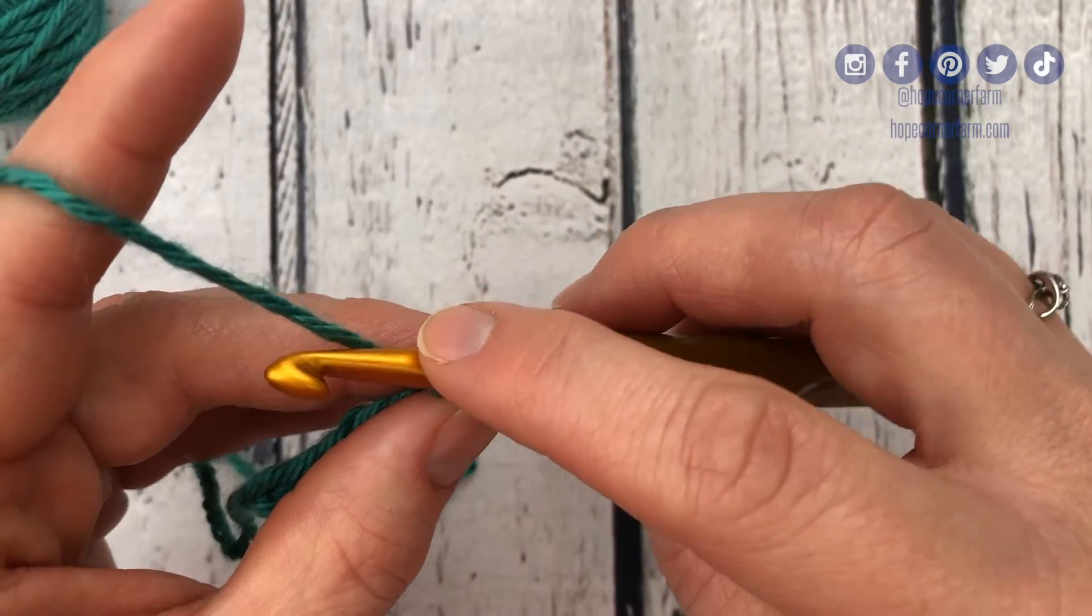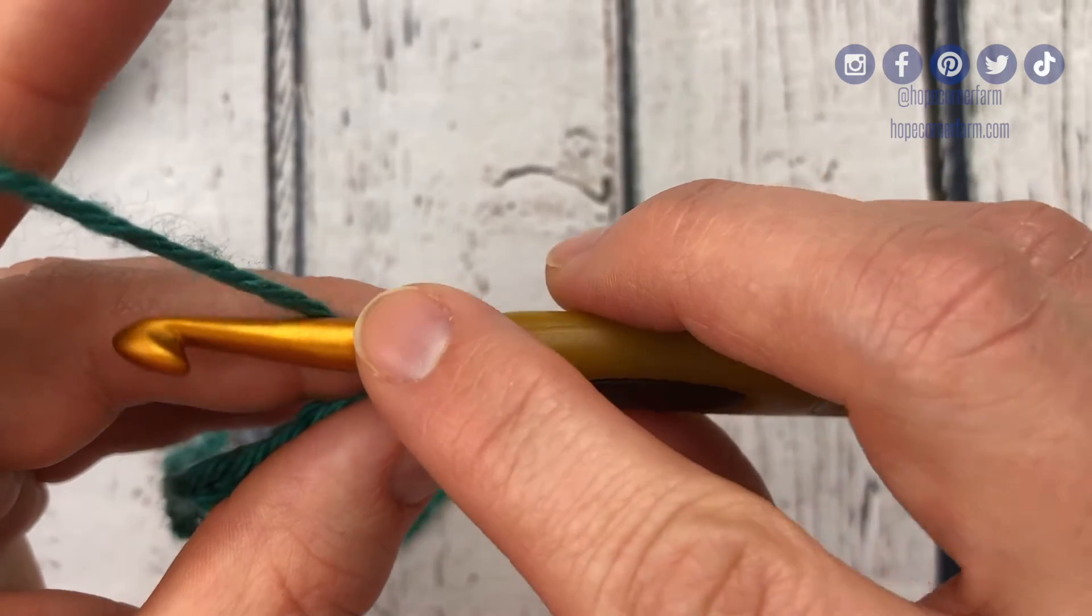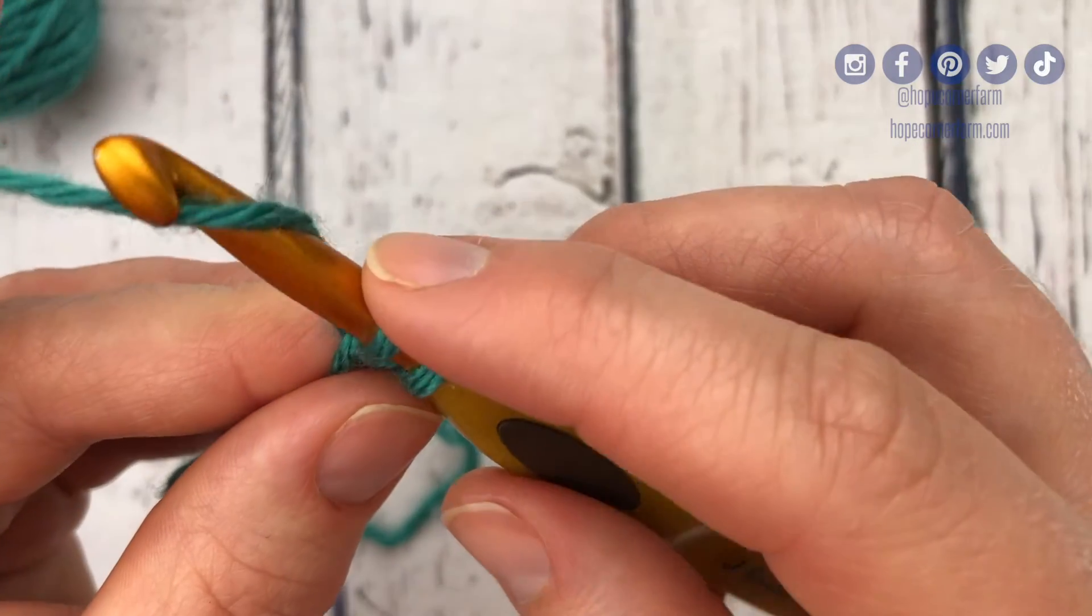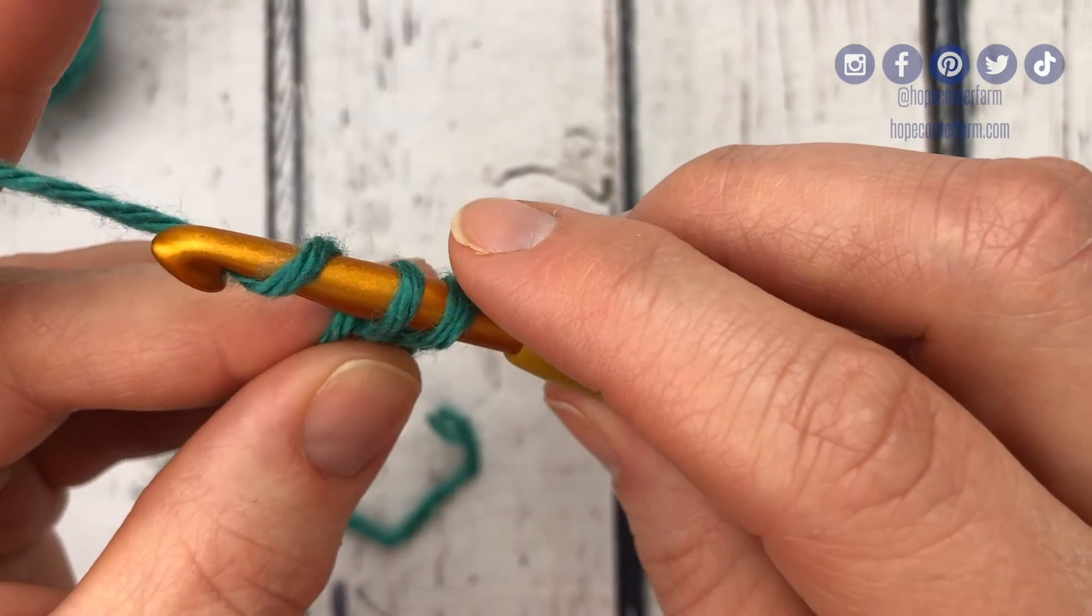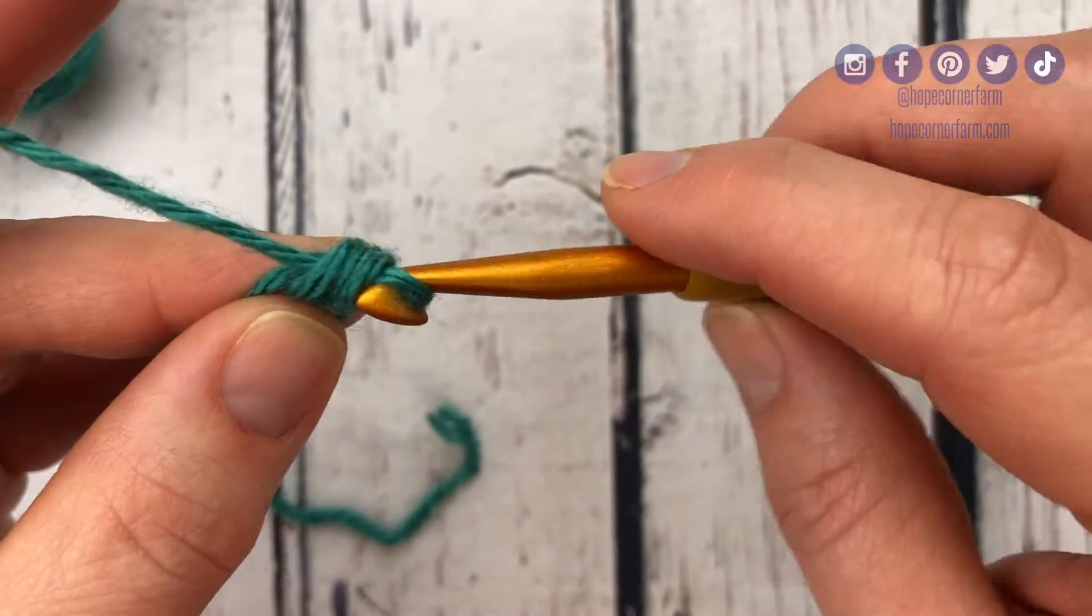Now this yarn over is gonna look a little bit different. We go back around, rotate our hook till it's facing down, and pull through both of those loops.